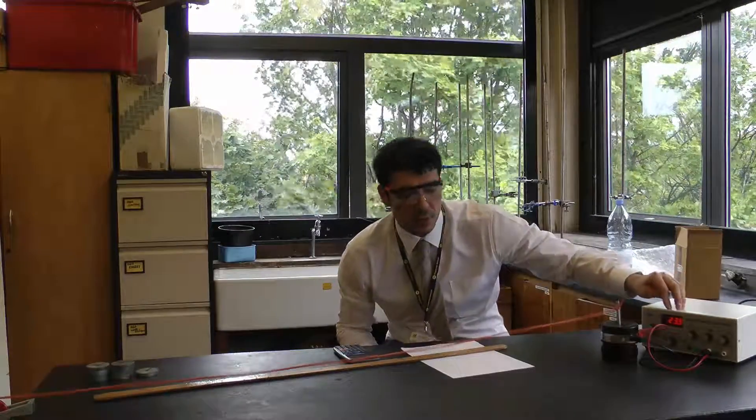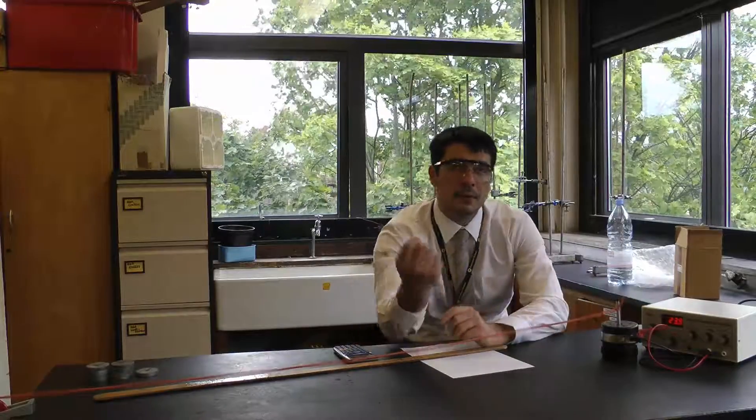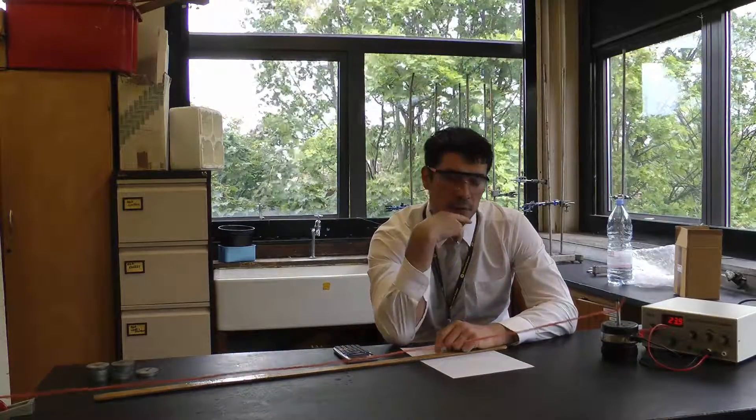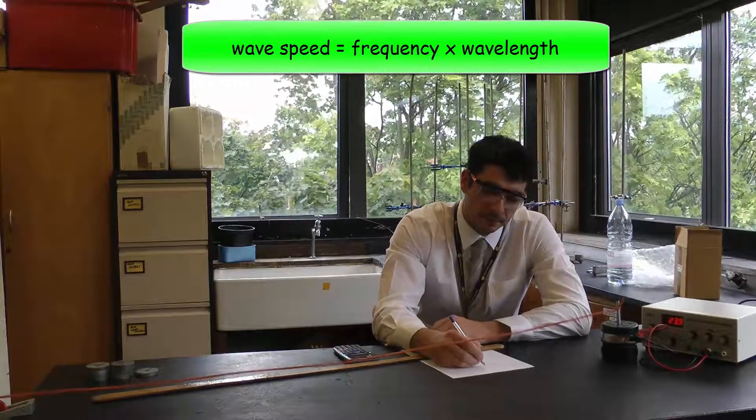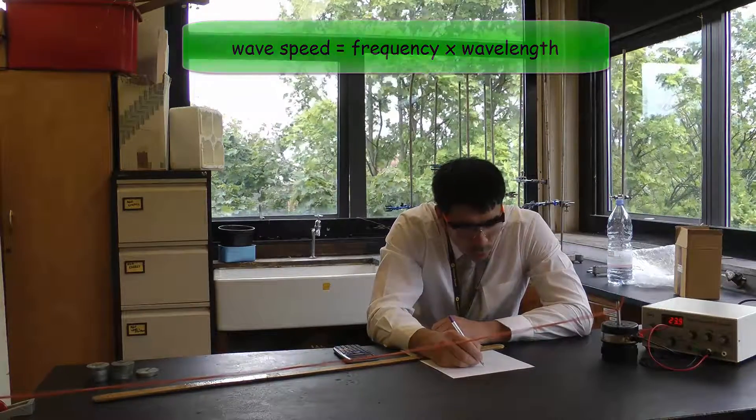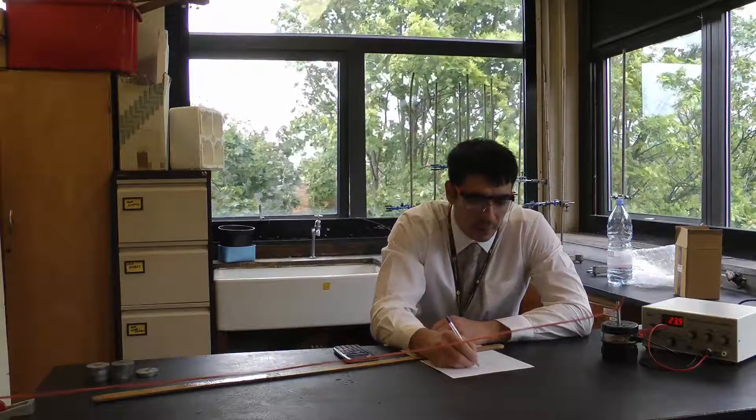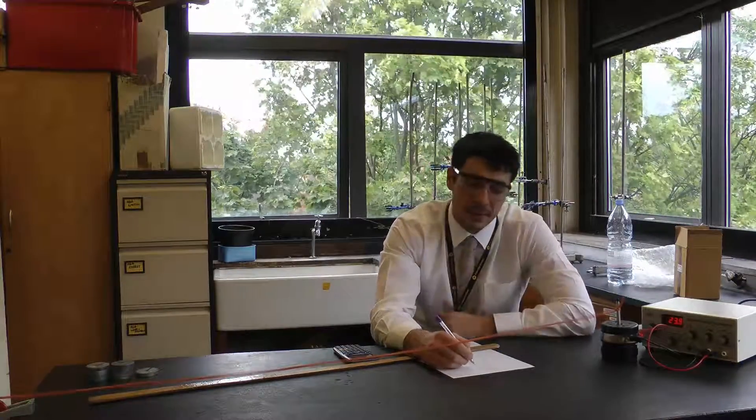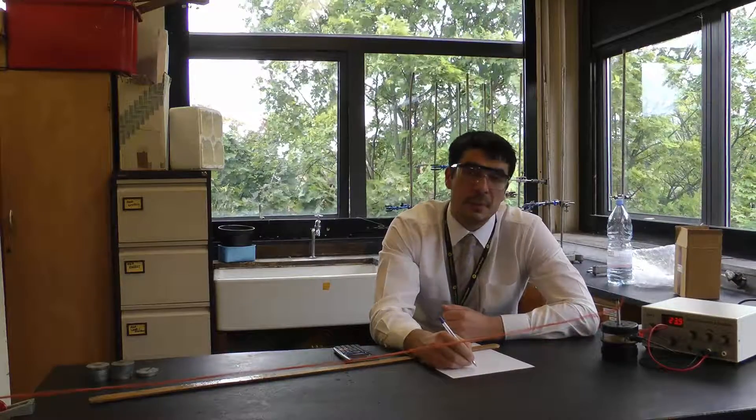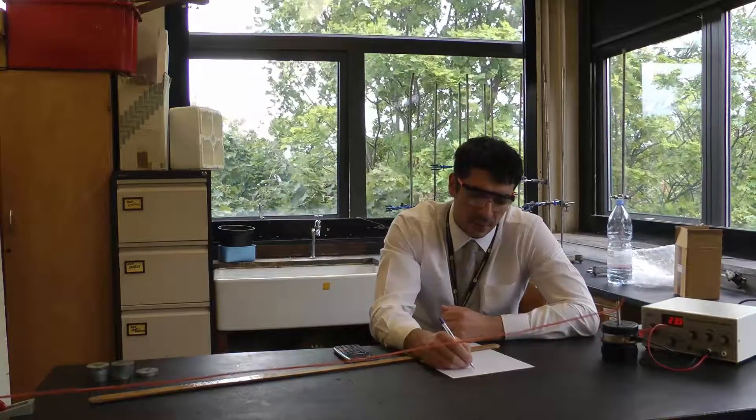I know the frequency at which this wave has been generated, and I know the wavelength, so I can calculate the velocity. So v equals f lambda. Subbing the numbers in, I've got 23.9 hertz multiplied by 39.4 centimetres.